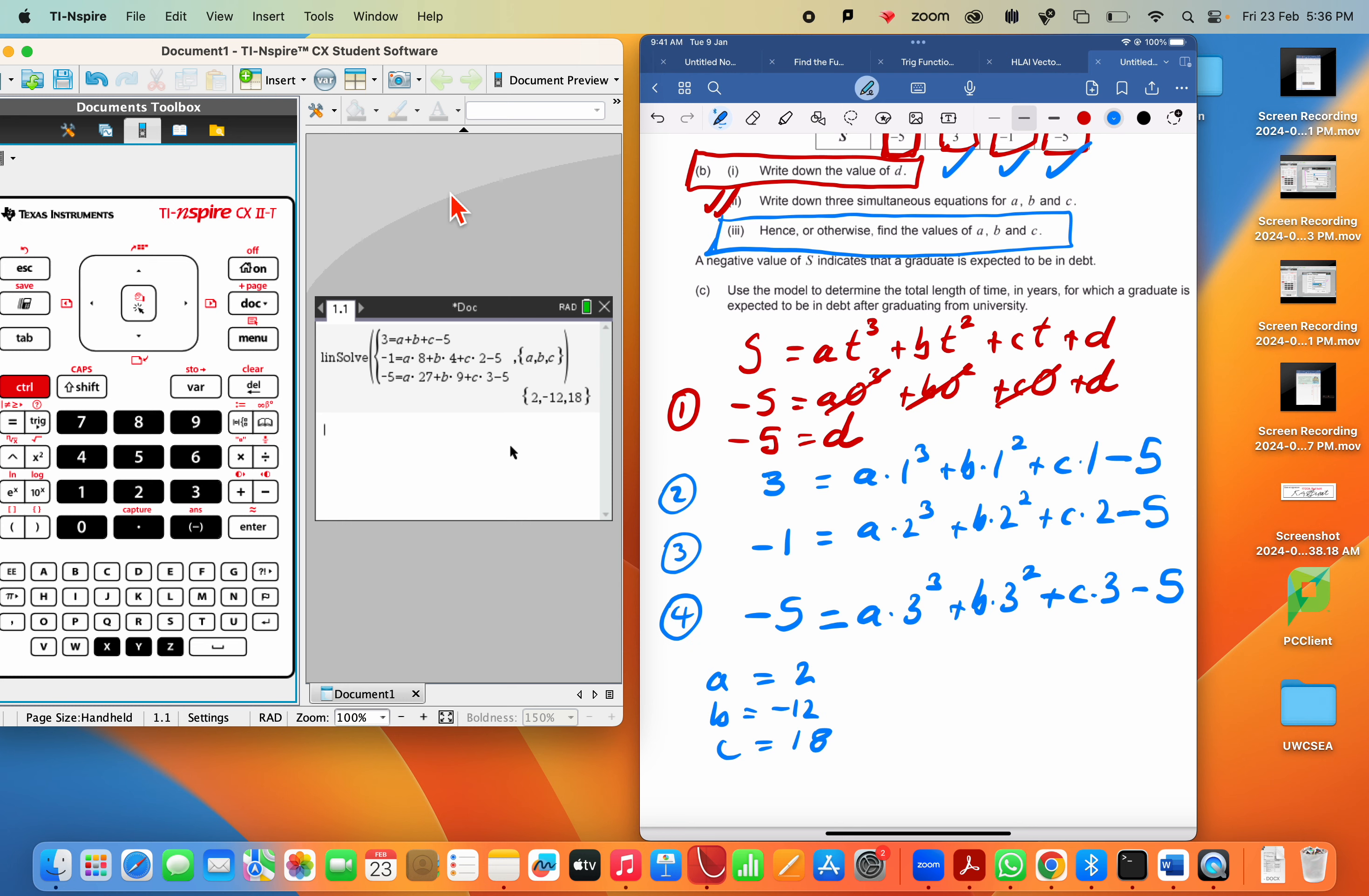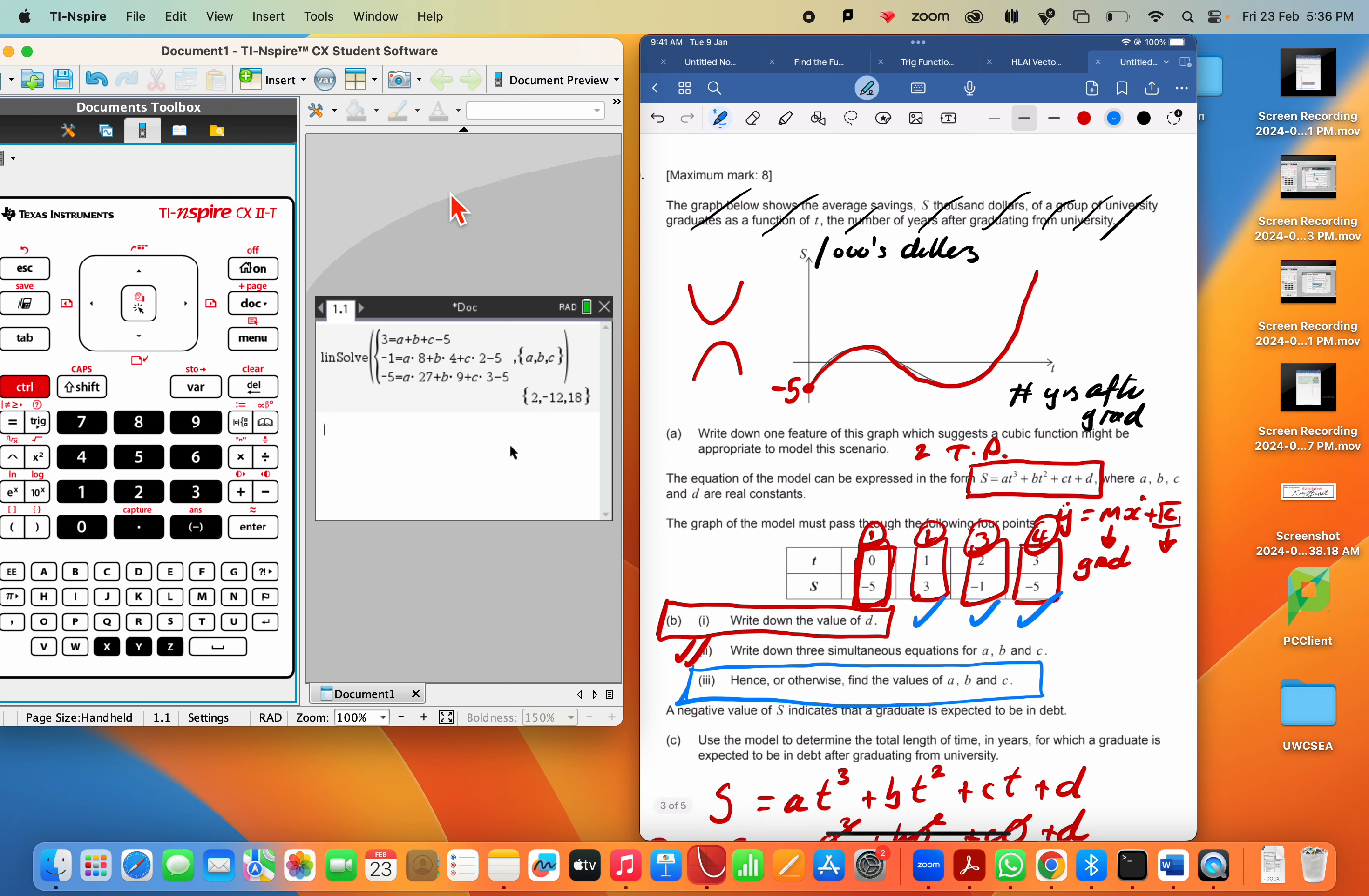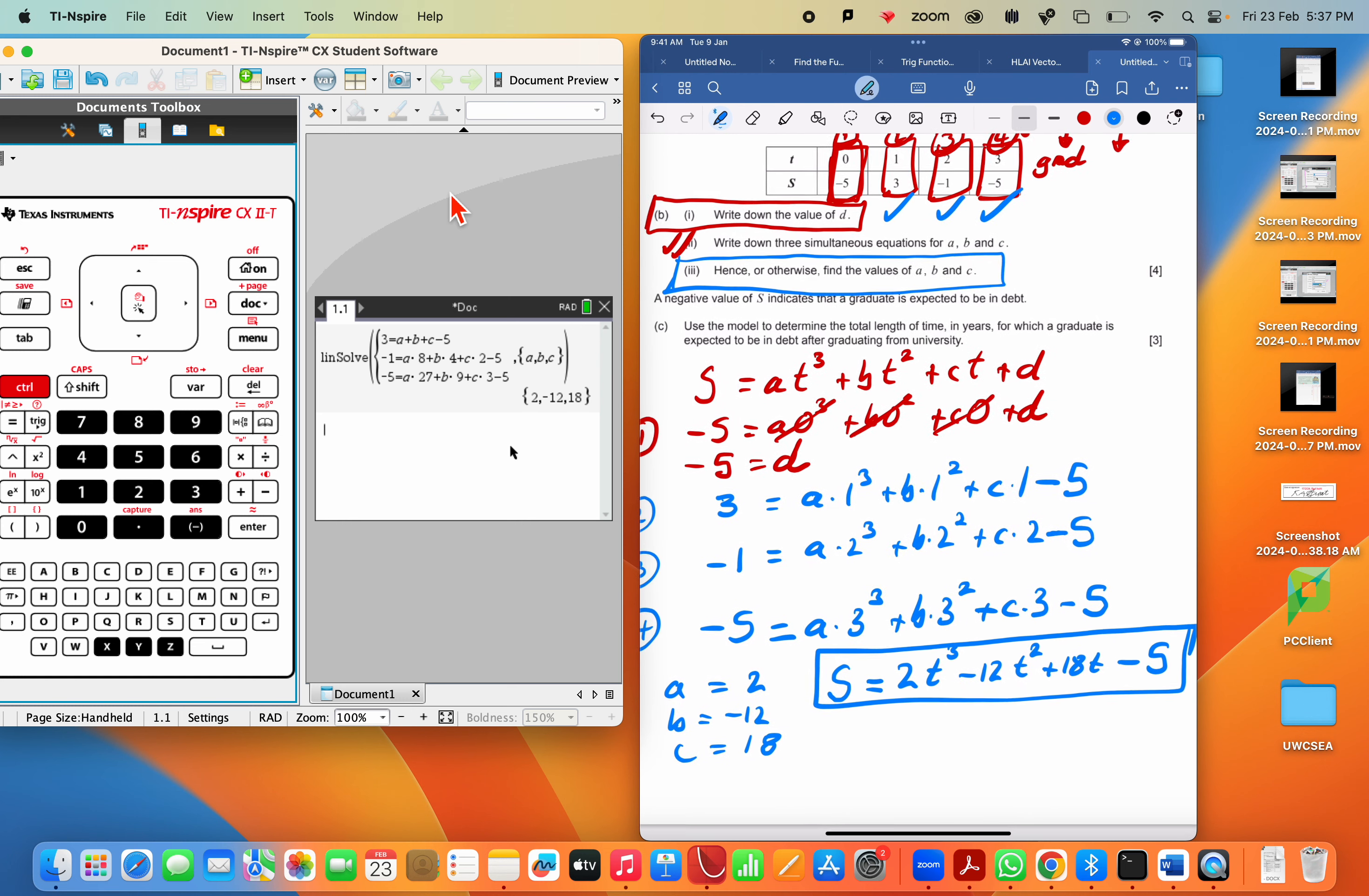So I'm going to write out the whole function now, S. And S represents the thousands of dollars of savings. S equals A times T cubed plus B times T squared plus C times T plus D. So there's our model.